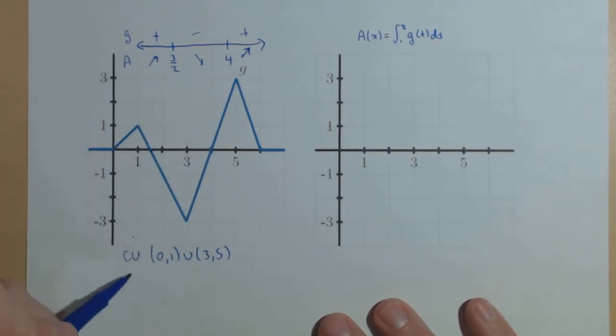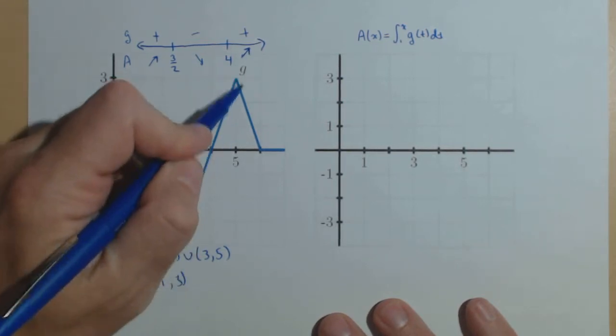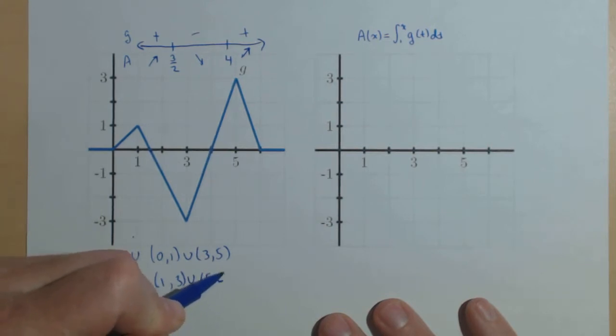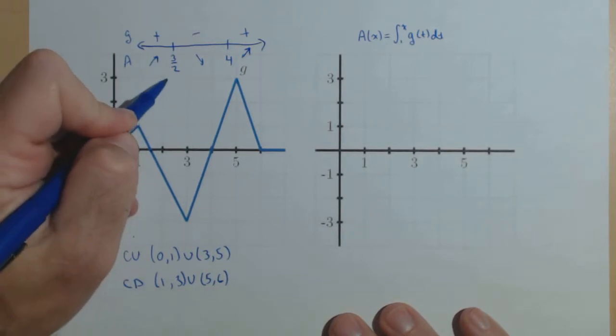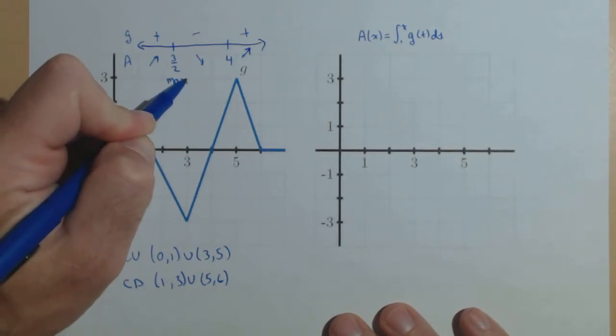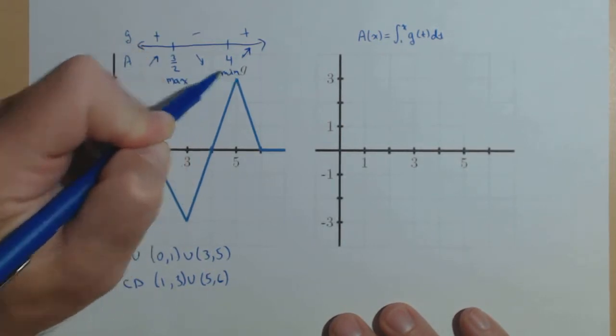Derivative is increasing. Concave down from 1 to 3, and from 5 to 6. Looks like we have a relative max at 3 halves, and a min at 4.